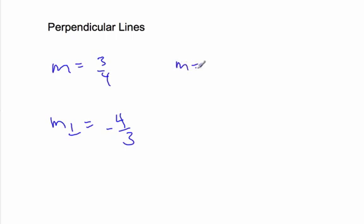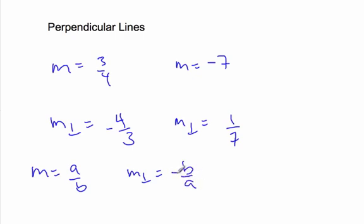Those two are perpendicular. If I have, let's say, negative 7 as my slope, a perpendicular slope, it's going to be positive, it's going to be 1 over 7. Right. Change the sign, flip the fraction. And so, I know if m equals a over b, the perpendicular slope, flip the fraction, b over a, change the sign.